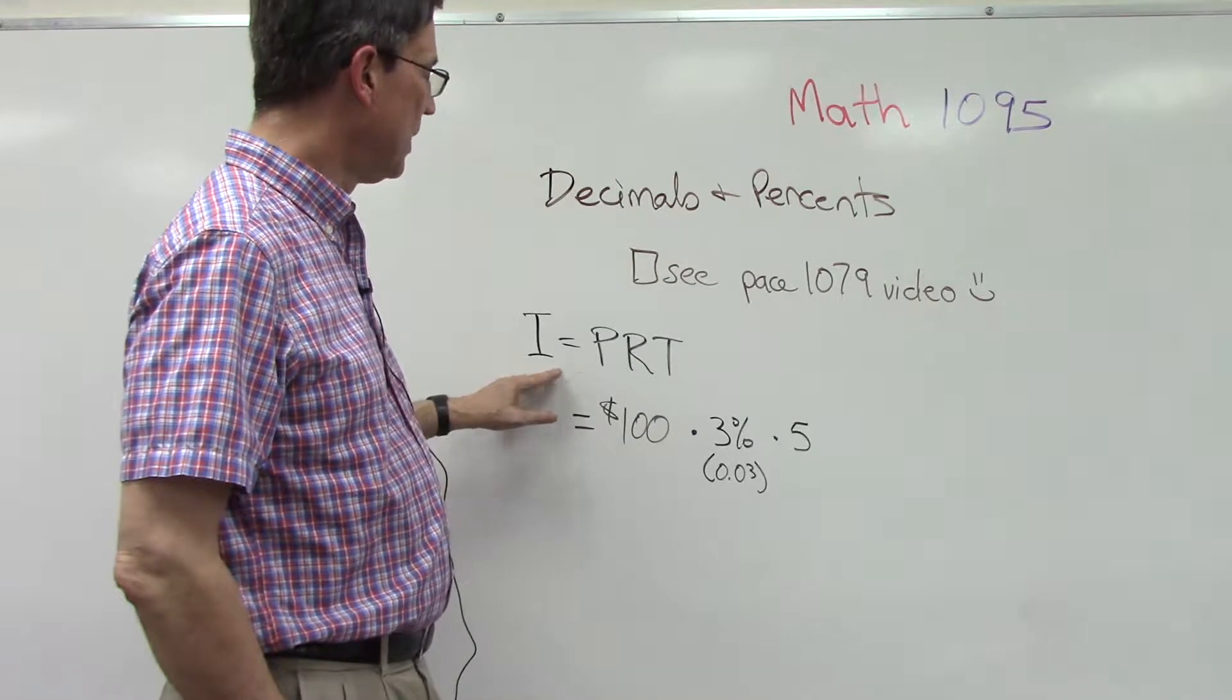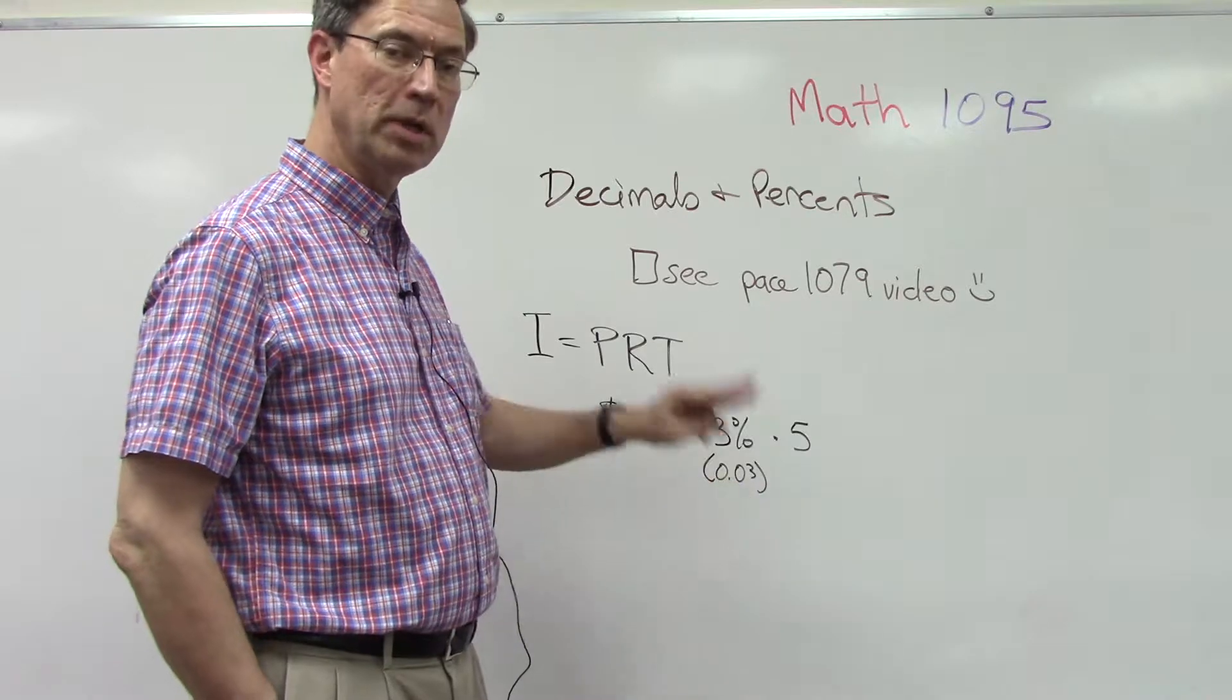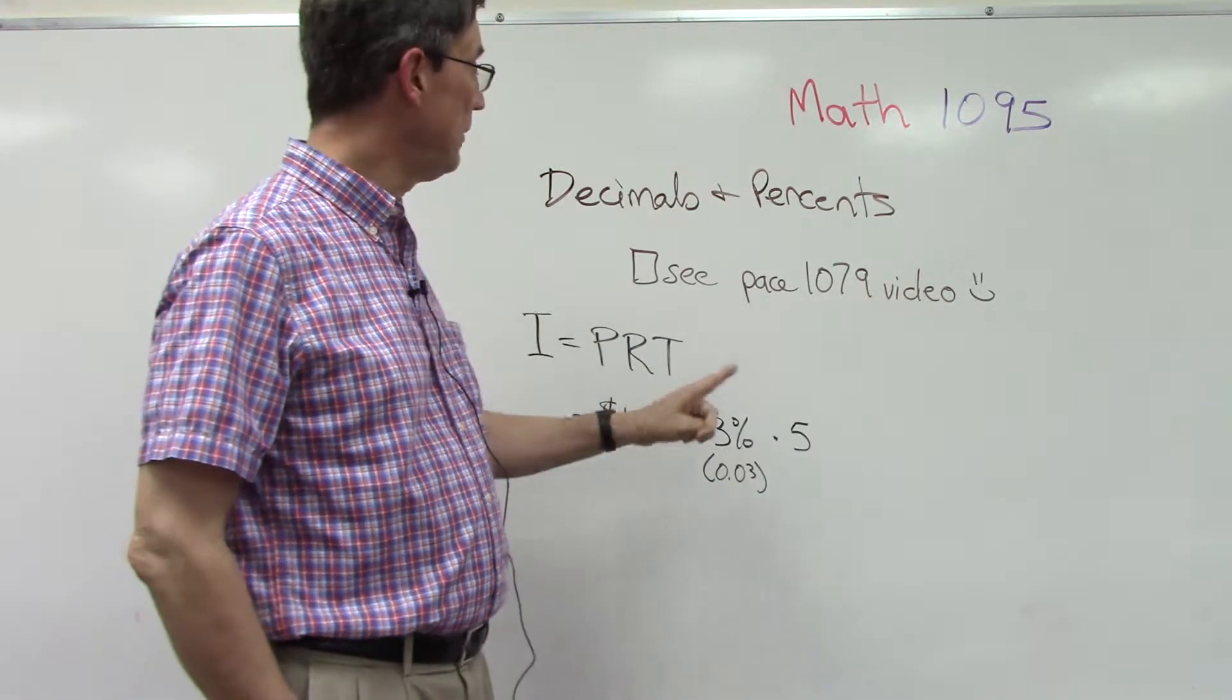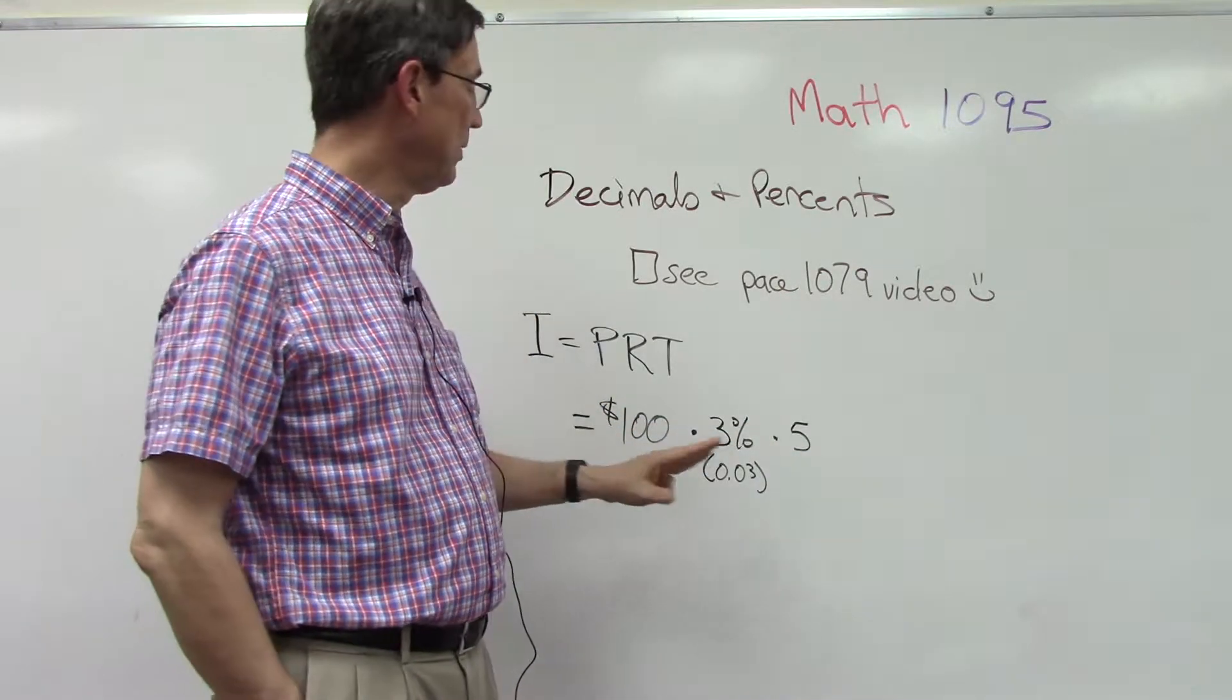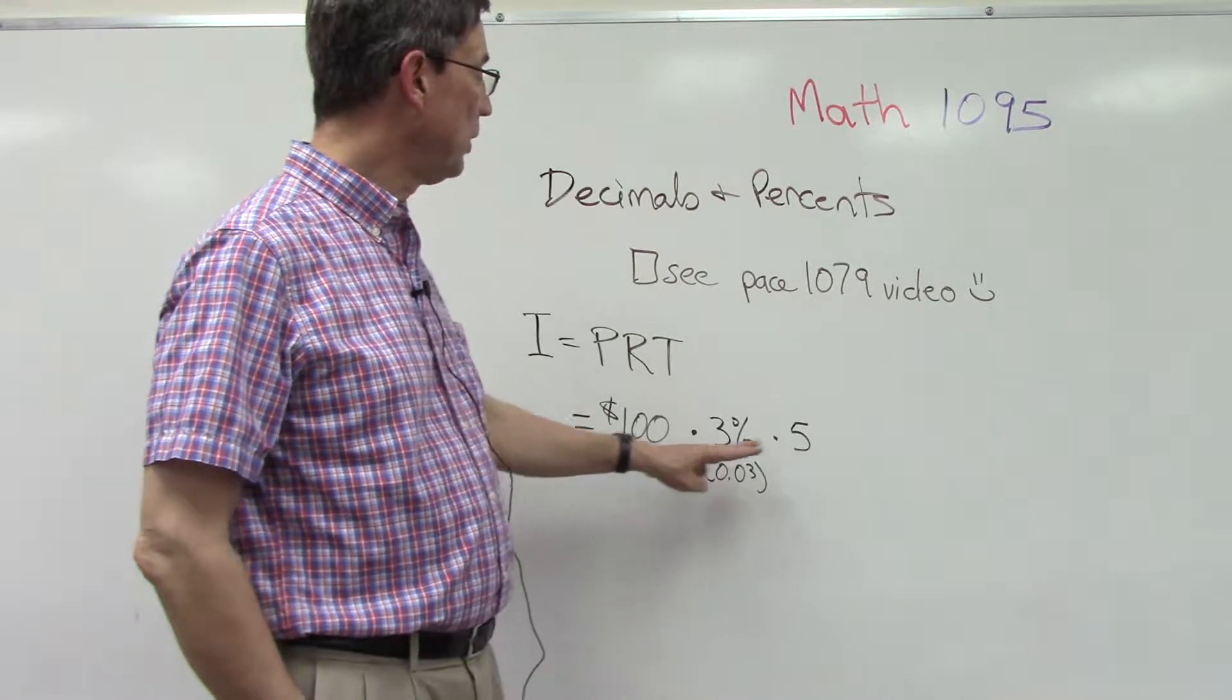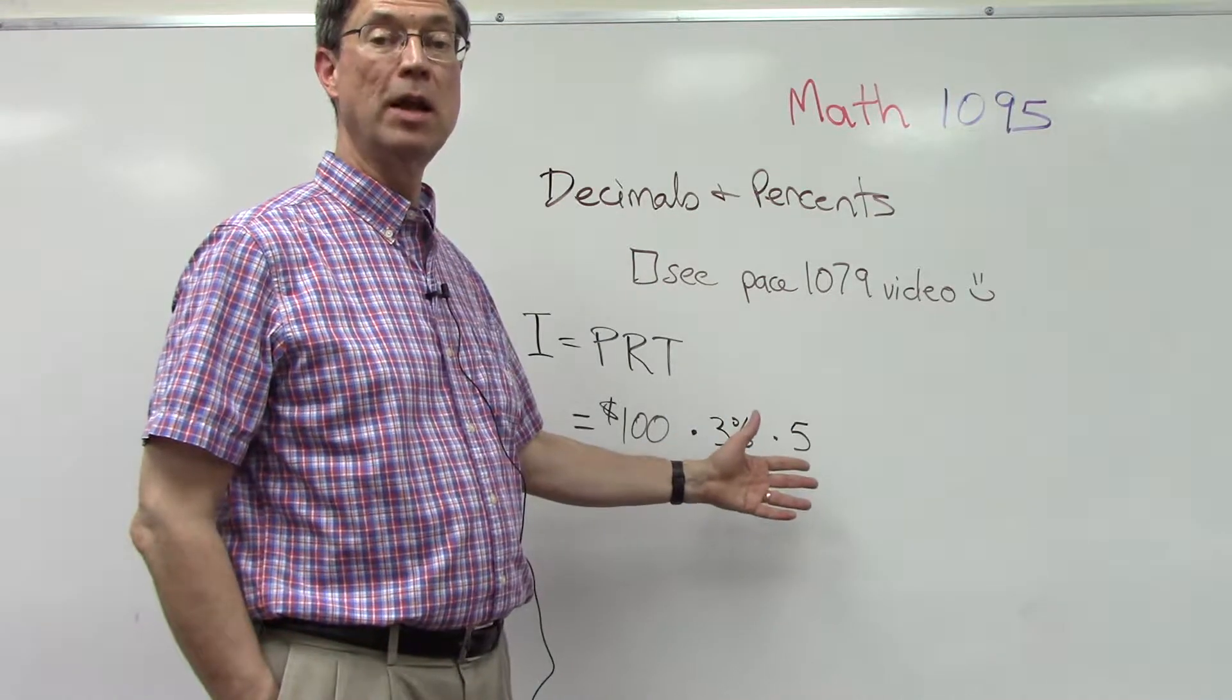If you take a hundred and multiply that times 0.03, you'll get three dollars. That's the interest for one year - you earn three dollars by leaving that money in. Then if you multiply that times five years, you've earned fifteen dollars.